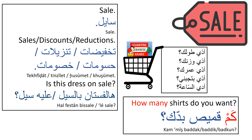To ask how many shirts someone wants: 'kam amis baddak' — we use 'kam' for countable quantities. Remember 'adde' is for how much (price, weight, height, age, time). 'Adde tawlak' — how tall are you; 'adde waznak' — how much do you weigh; 'adde aamurak' — how old are you; 'adde bthibbni' — how much do you love me; 'adde as-saaa' — what time is it.